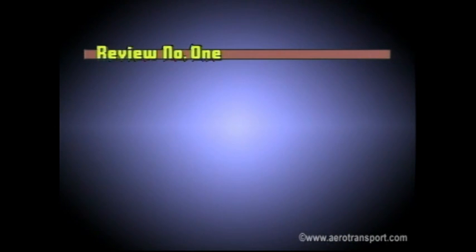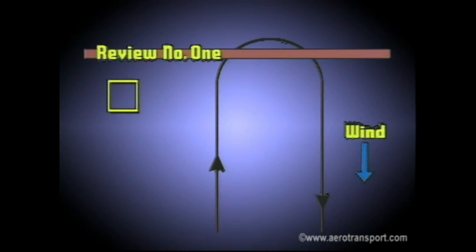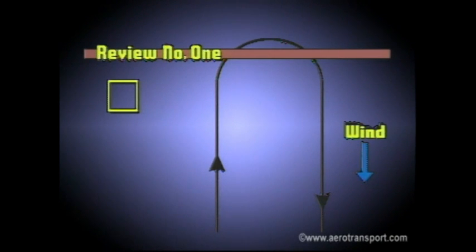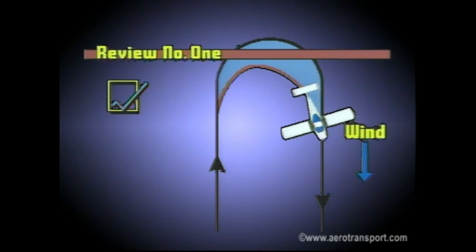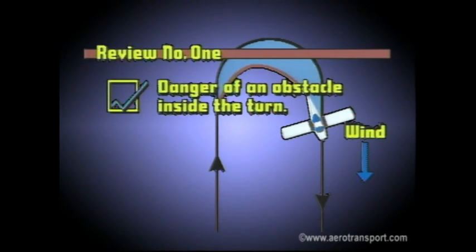Quick review: When turning from upwind to downwind at a low level in a high wind, it may appear that you are slipping inwards even though your turn is accurate. You must compensate for the drift, which is real. You must not use the rudder to compensate for the slip, which is an illusion. This situation can be dangerous if there is an obstacle inside the turn and you do not allow enough room to avoid it.